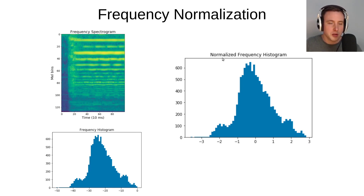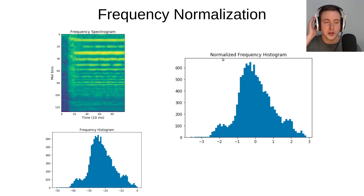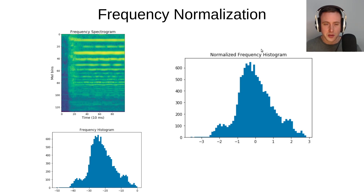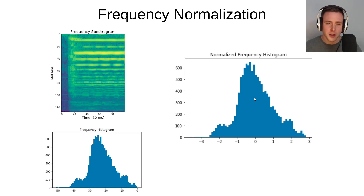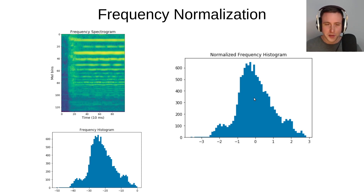One thing we need to do before feeding this into the model is normalization. I've tried the normalization layer within Kapre — specifically frequency normalization — but I wasn't able to get consistent results because the batches change all the time. I've had good results with batch normalization. By normalization I mean standardizing, not just scaling between zero and one — you get a distribution centered around zero and scaled nicely.